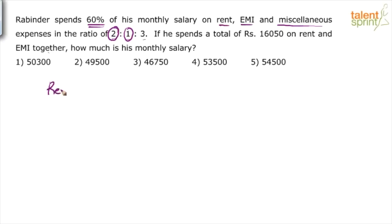So the percentage contribution of rent and EMI equals (2x + x) divided by (2 + 1 + 3), times 60%. This 2 + 1 is 3, which is half of 6. So half of 60% is 30%.